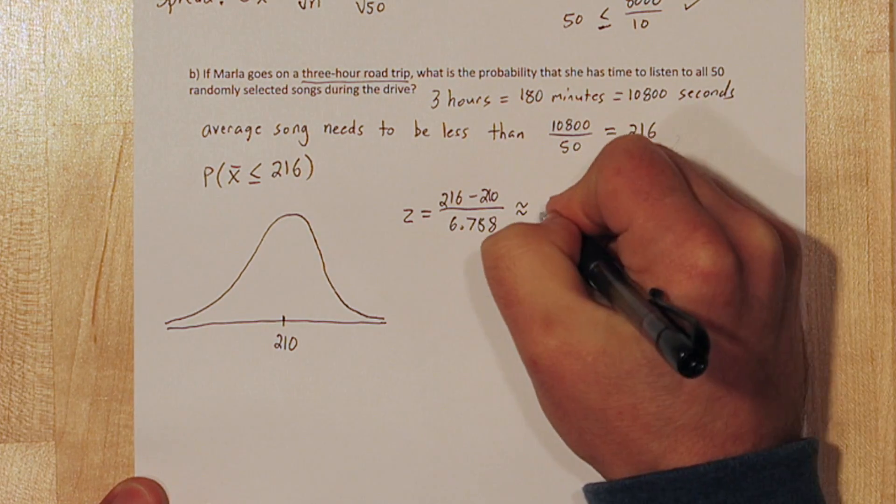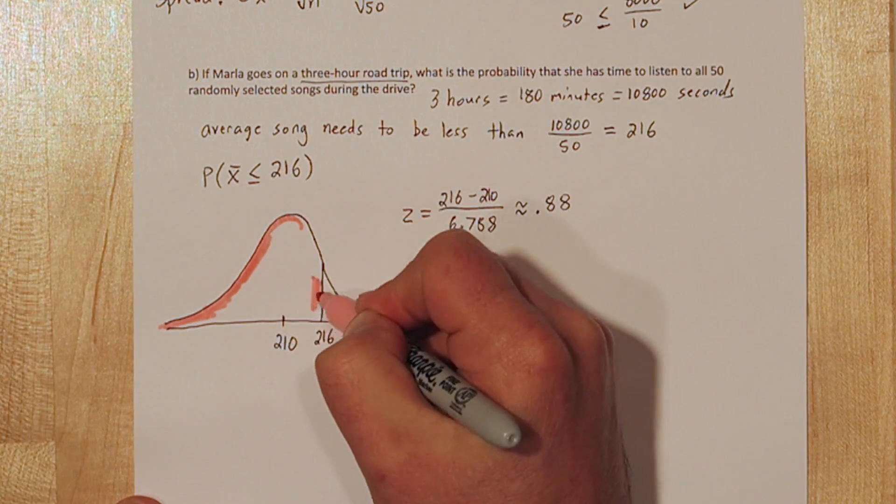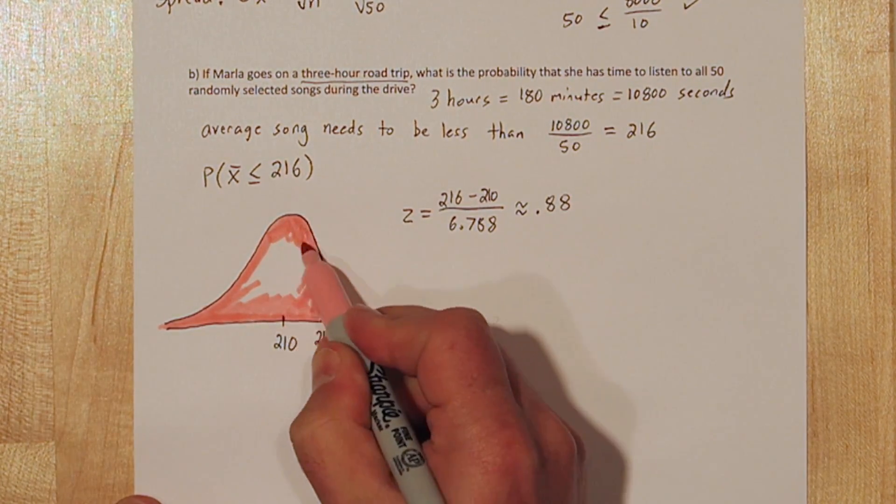The Z score is 0.88. That's about right here. So 216 and less is this entire shaded region.